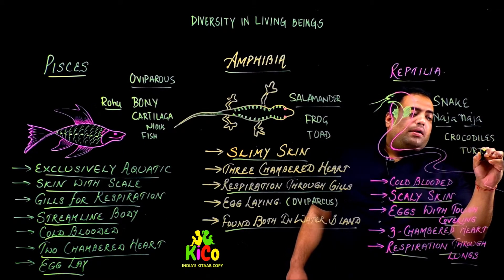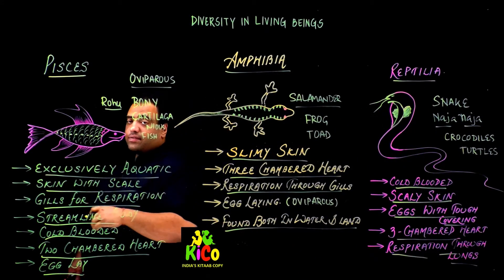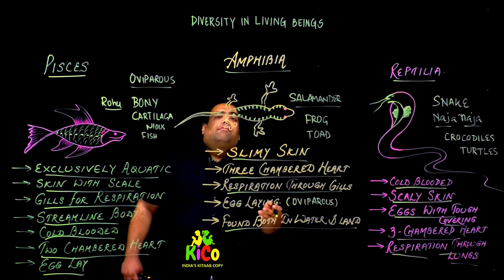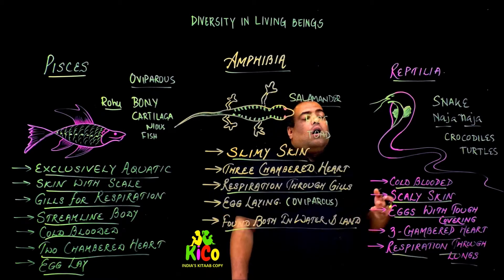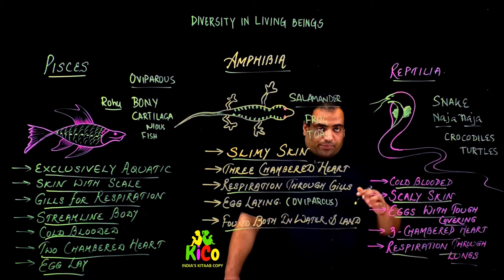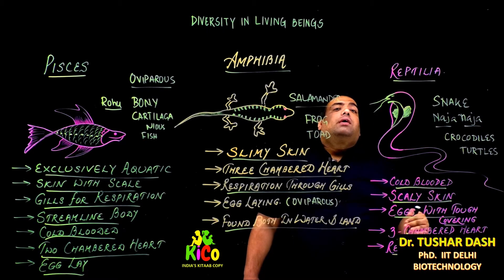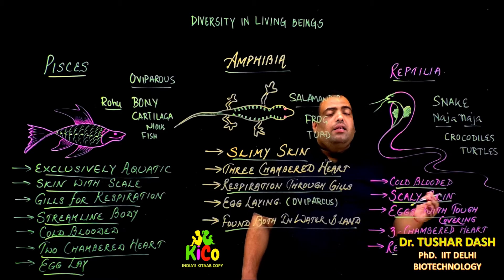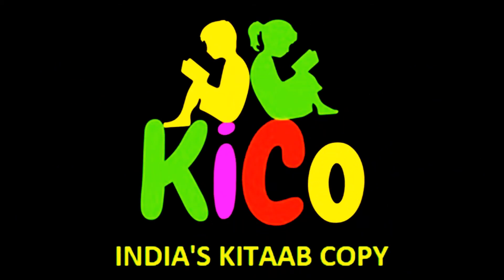So today we have studied three classes: Pisces, which constitutes fishes; Amphibia, which constitutes frogs, toads, salamanders, etc.; and Reptilia, which includes snakes and others. Further, after the evolution of reptiles, we have Mammalia — which we will cover next.